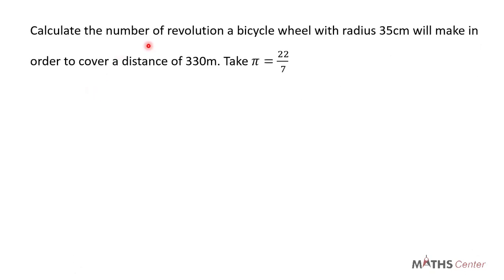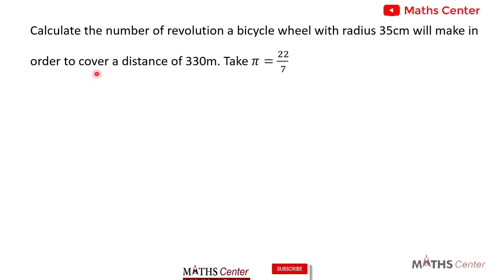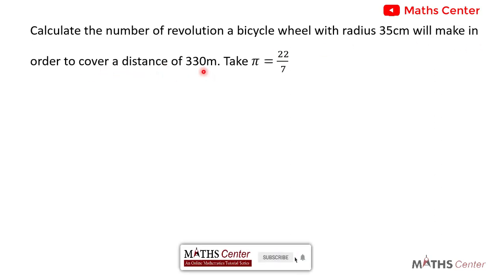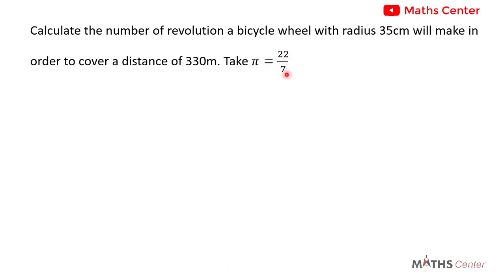Calculate the number of revolutions a bicycle wheel with radius 35 centimeters will make in order to cover a distance of 330 meters. Take pi as 22 divided by 7.